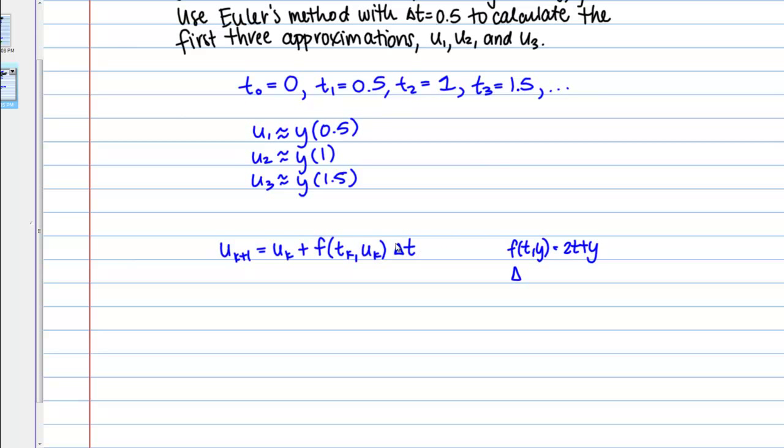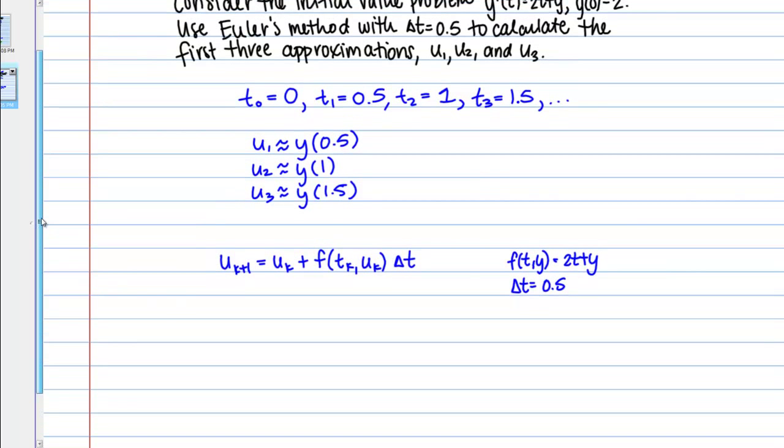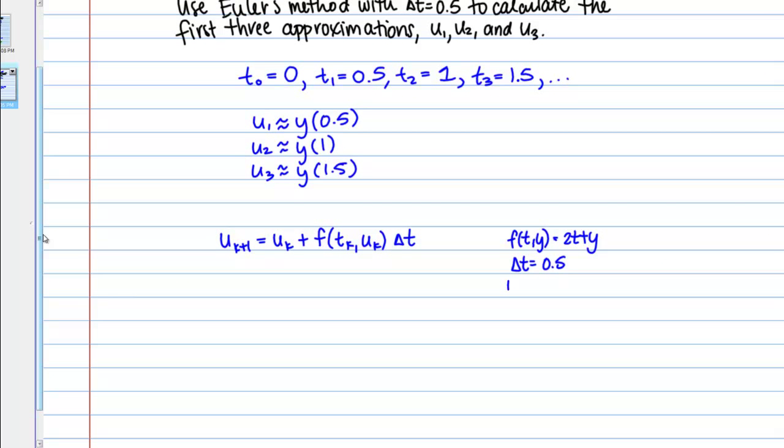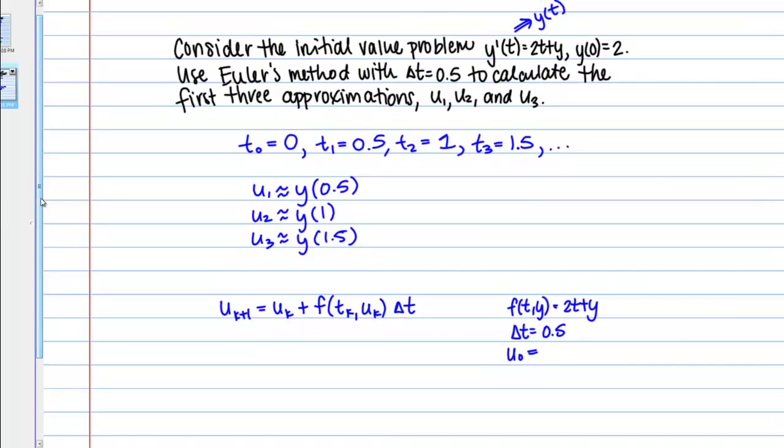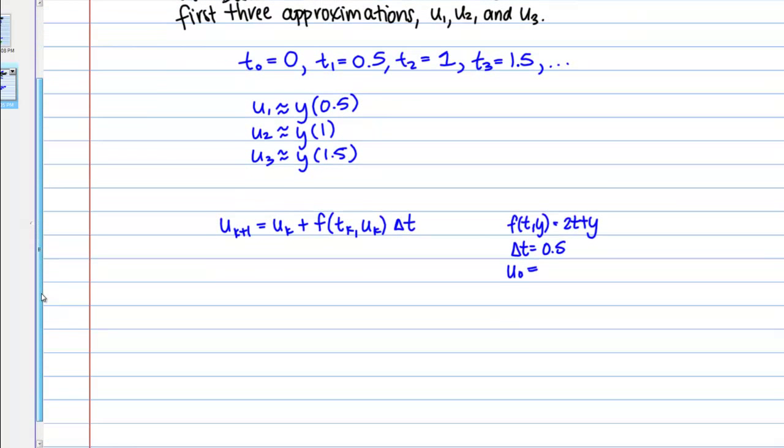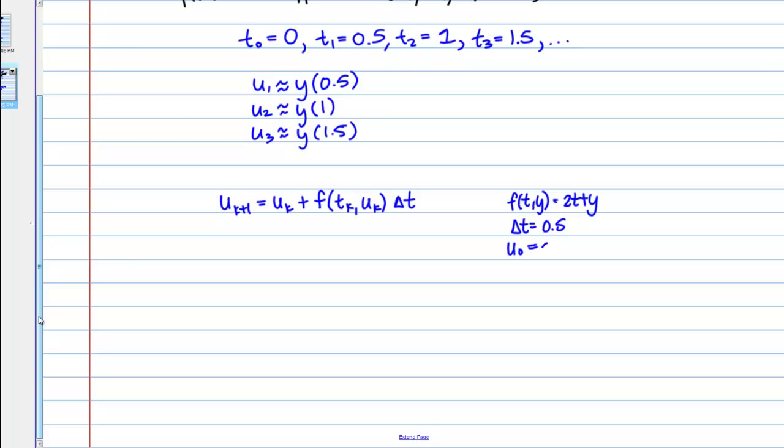Then delta t is of course our time step, which we're given, 0.5. One other thing we need to start this process is a starting point, which we call u0. This is actually given by the initial condition provided with the differential equation. We're starting with an exact value and then making our approximations from there. Since y of 0 equals 2, that value of 2 is going to be my starting point for my approximations.